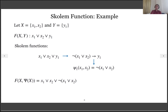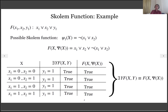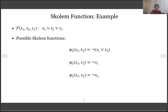One can wonder whether negation of (x1 or x2) suffices as the Skolem function for y1. Let us verify that. We compute f(x, ψ(x)) by replacing y1 with the function negation of (x1 or x2). As you can see, for all valuations of x for which f(x,y) evaluates to true, f(x, ψ(x)) also evaluates to true. Hence, this is indeed a Skolem function for y1. But is this the only possible Skolem function? It turns out there can exist multiple possible Skolem functions: negation of (x1 or x2), negation of x1, negation of x2, or even the constant function 1. Our objective is to synthesize one such function.